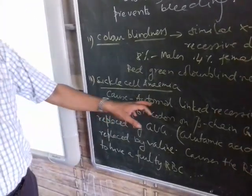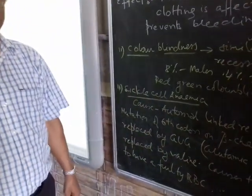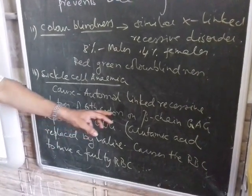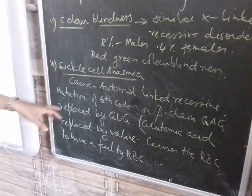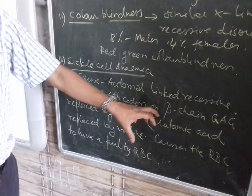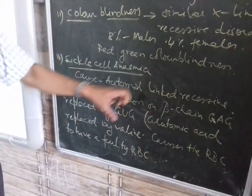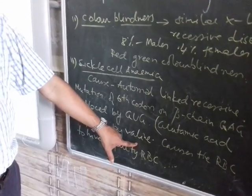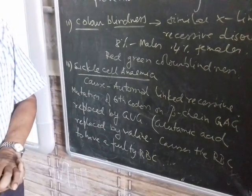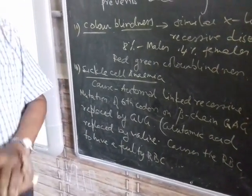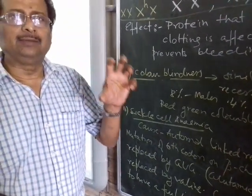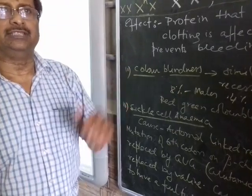Sickle cell anemia is an autosomal recessive disorder. It occurs due to a mutation in the sixth codon of the beta-globin chain, where GAG is replaced by GUG, meaning the codon for glutamic acid is replaced by the codon for the amino acid valine. This causes the structure of the RBC to change, resulting in a faulty RBC structure and accumulation of hemoglobin at a portion of the RBC.